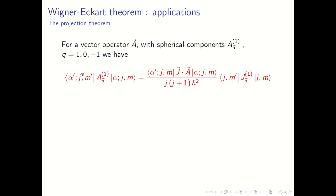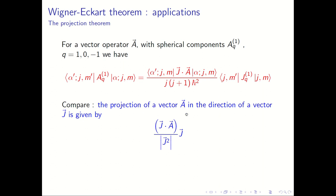There is one rather interesting result: the matrix element of A^(1)_Q between angular momentum eigenstates is actually proportional to the matrix element of J^(1)_Q, where J^(1)_Q are the spherical tensor components of the angular momentum vector J. The prefactor is the matrix element of J·A divided by the matrix element of J², which can be thought of as the projection of vector A in the direction of vector J — analogous to (J·A)/|J|² from elementary vector algebra.